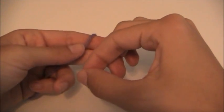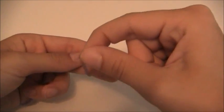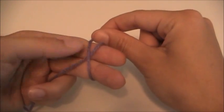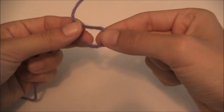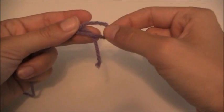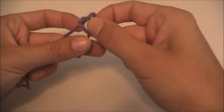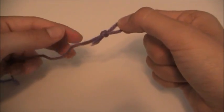I wrap the yarn around my pointer finger and my middle finger and I bring the yarn up and kind of lay it over top of each other. I'm going to pull the loop off my fingers and I'm basically going to stick the yarn underneath the loop and I'm going to grab the tail and then pull on the ends.